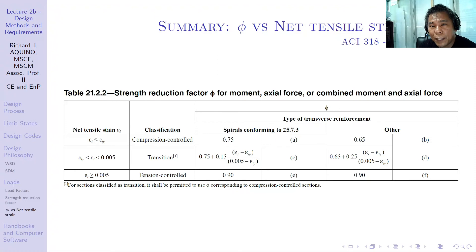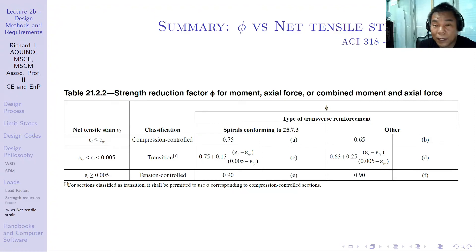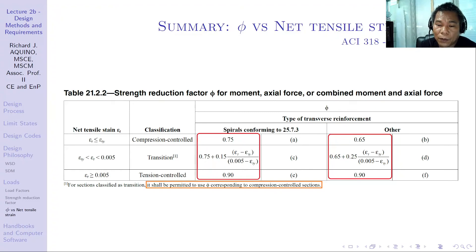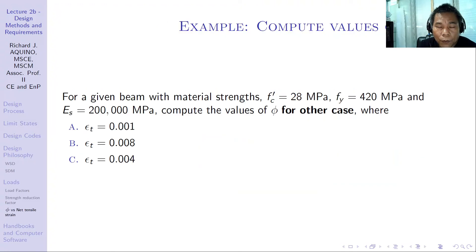As a summary, the strength reduction factor versus net tensile strain is shown in a table. You can use either the graph or the table depending on your preference. Note that for sections classified as transition, the code permits using phi corresponding to the compression-controlled section, since it is not always possible to compute everything during design.